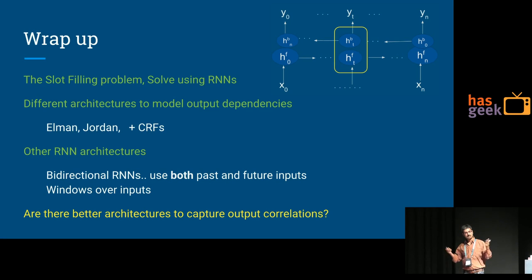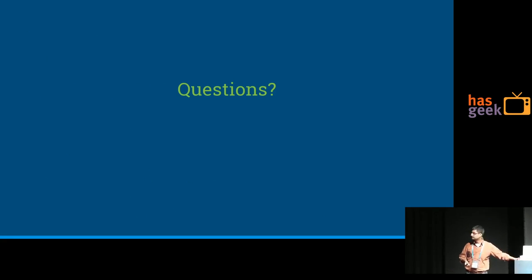That's what I basically wanted to communicate: how hard solving the problem is. I want to leave you with the thought that are there—if you think more about it—are there better architectures that could help you solve this, capture this output correlations better? Thank you.